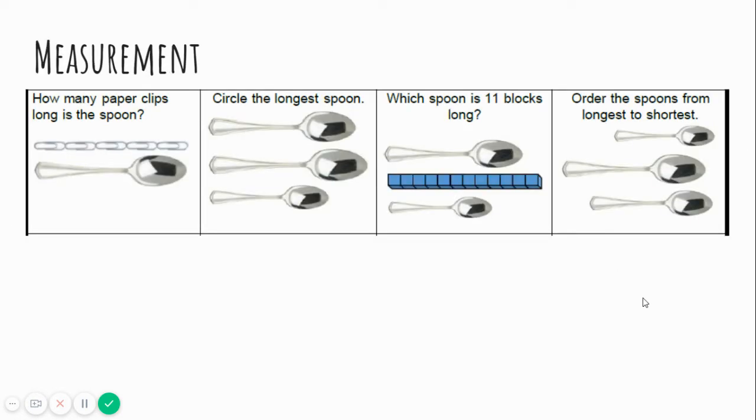Let's look at measurement. How many paperclips long is the spoon? Let's count. One, two, three, four, five. The spoon is five paperclips long.